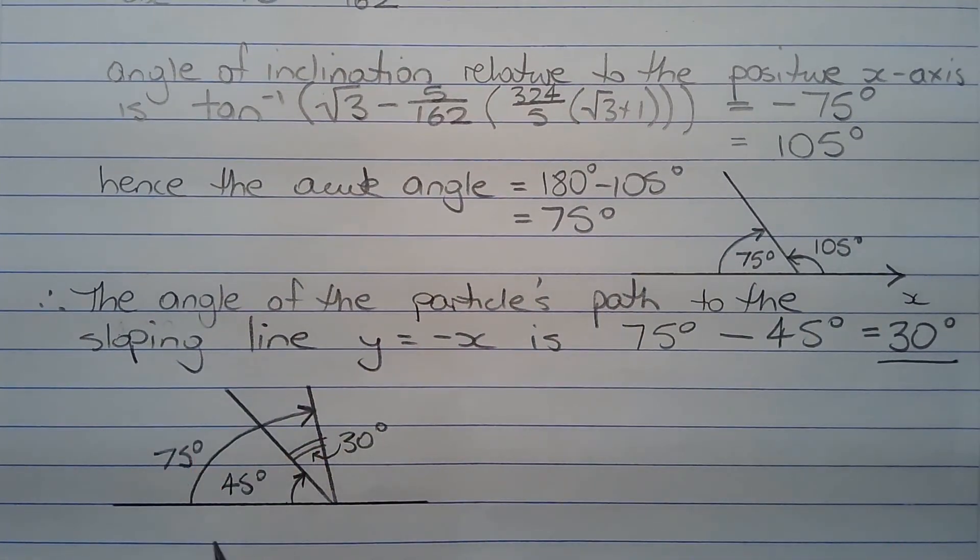And here it is shown on this diagram. This is the angle of the particle's path. This is the angle of the line y equals negative x. So notice that it's relative to the negative x axis. So the difference between 75 degrees and 45 degrees is 30 degrees.